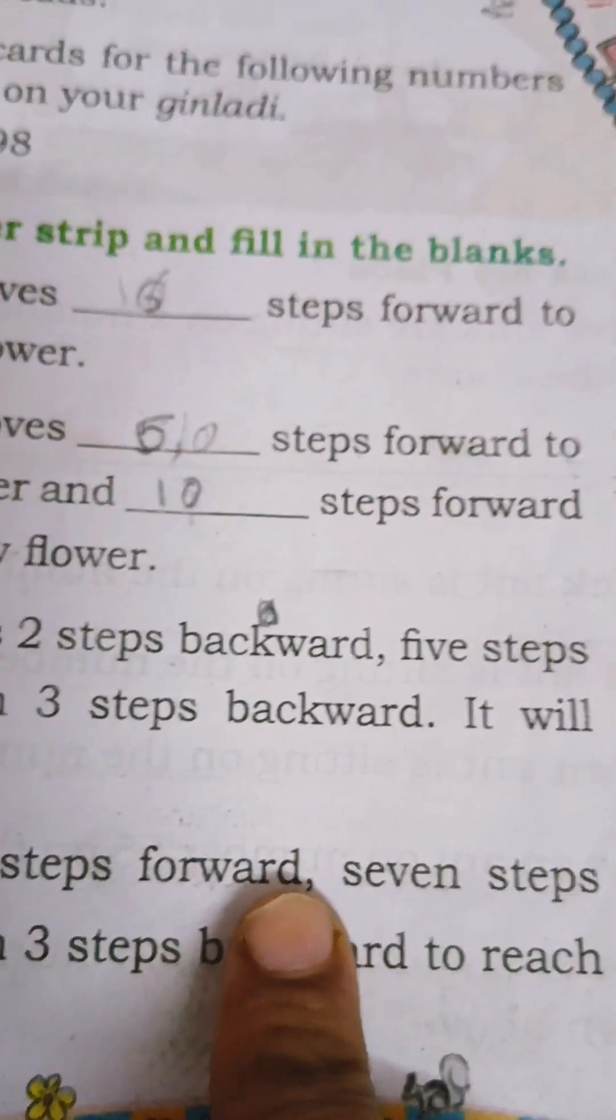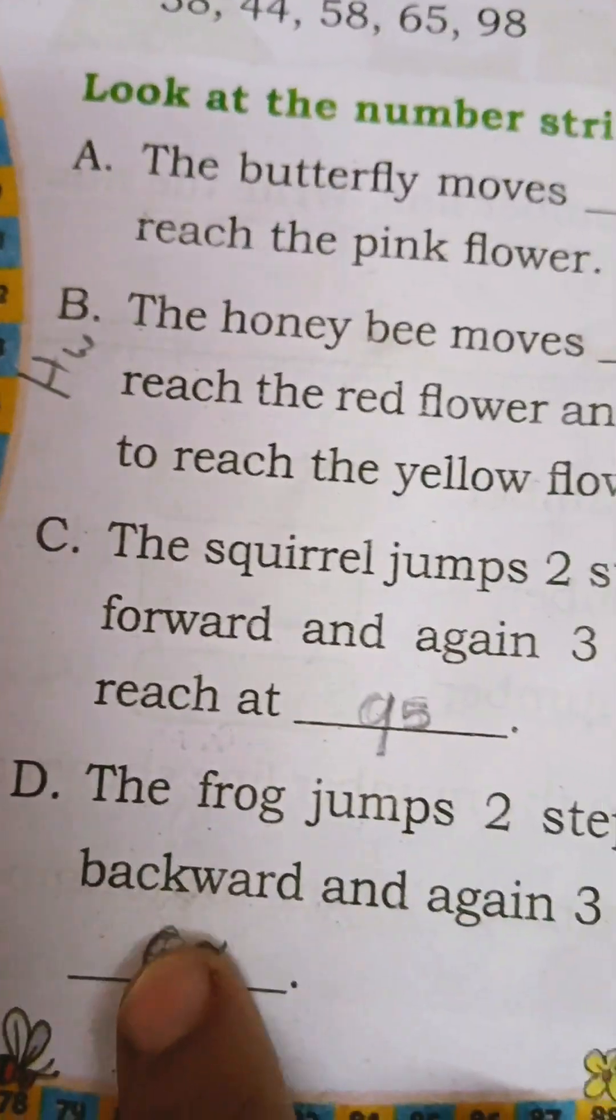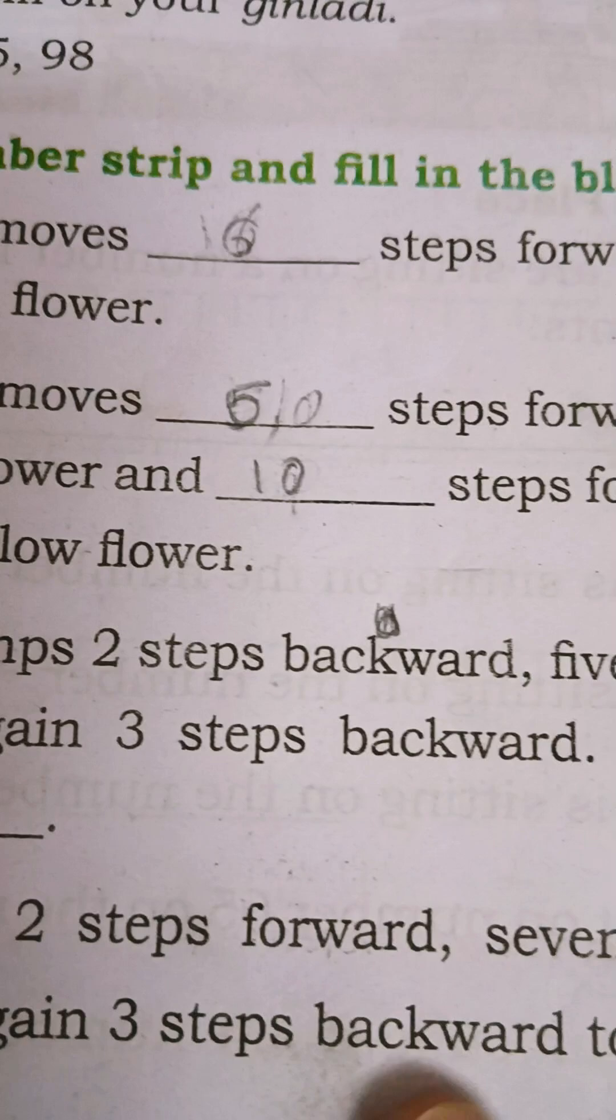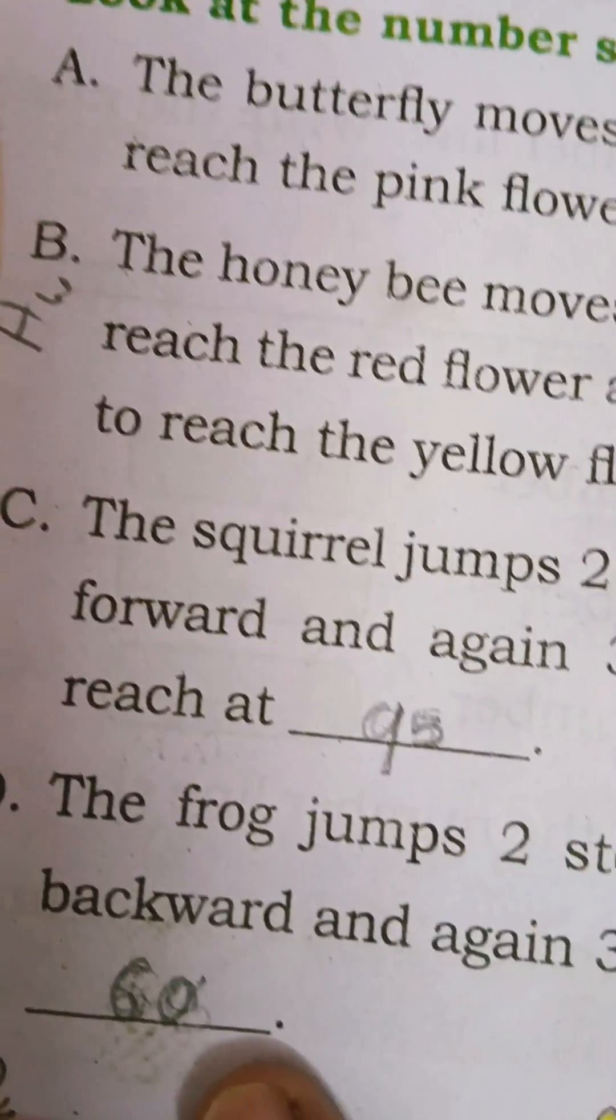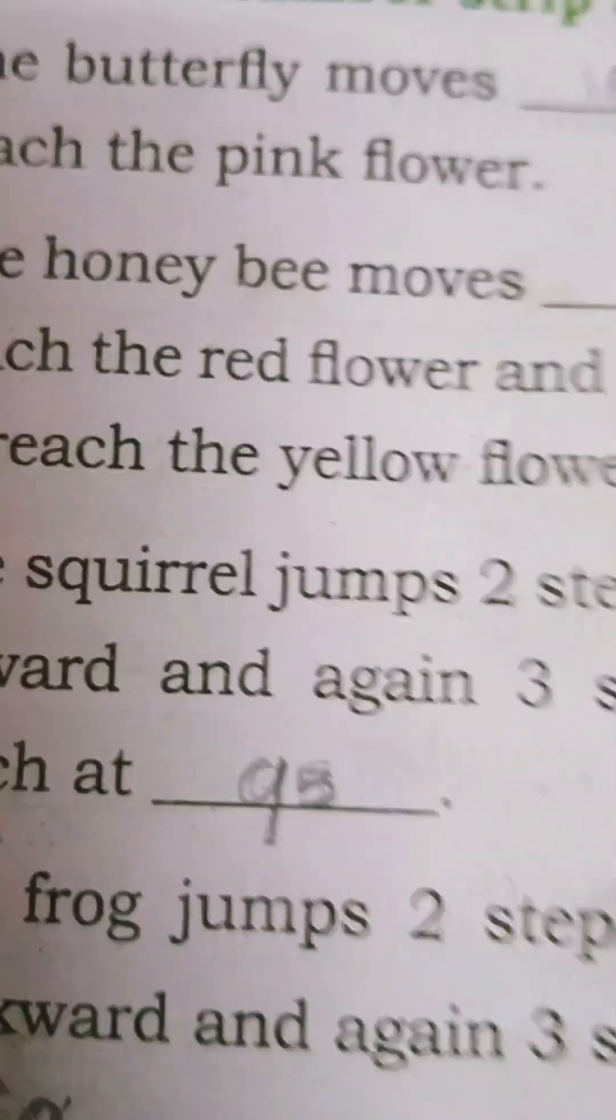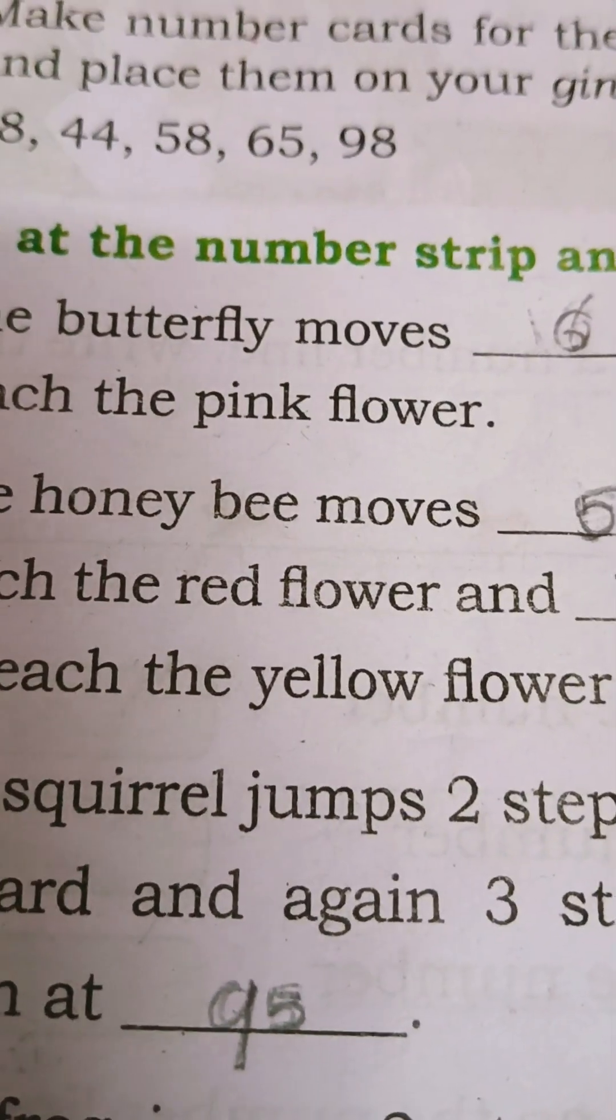The frog jumps 2 steps forward, 7 steps backward, and again 3 steps backward to reach... Where is it reach? 60. Like that you have to maintain.